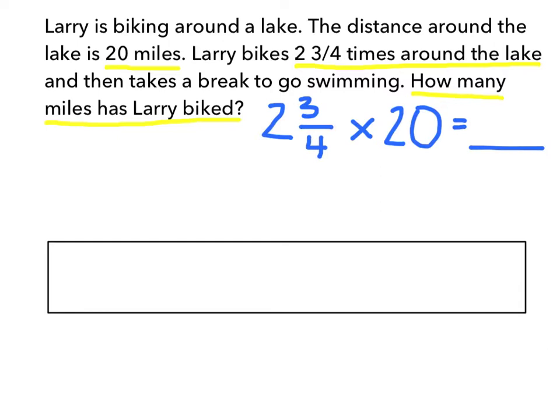Before I get started solving, I like to do a little estimation to make sure that my answer is going to be accurate. I know that if Larry biked 1 time around the lake, that would just be 20 miles. And if he biked 2 times around the lake, that would be 40 miles.